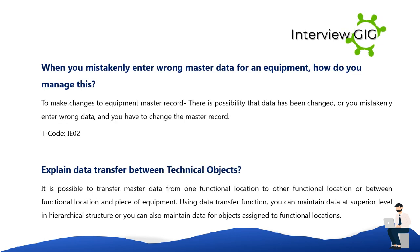When you mistakenly enter wrong master data for equipment, how do you manage this? To make changes to the equipment master record, use T-code IE02. It is also possible to transfer master data from one functional location to another functional location, or between a functional location and a piece of equipment. Using the data transfer function, you can maintain data at a superior level in a hierarchical structure, where you can also maintain data for objects assigned to functional locations.